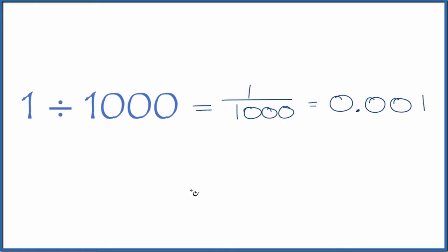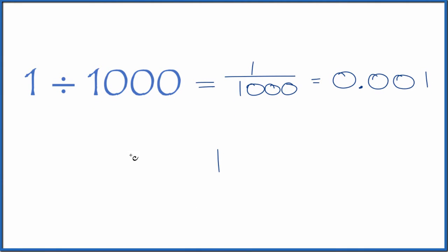You could also do the division longhand. Take 1 and see how many times 1,000 goes into 1. It doesn't go into 1. Let's call this 10, put a 0 with a decimal point. It doesn't go into 10, so we'll call it 100 and put a 0 after the decimal point.